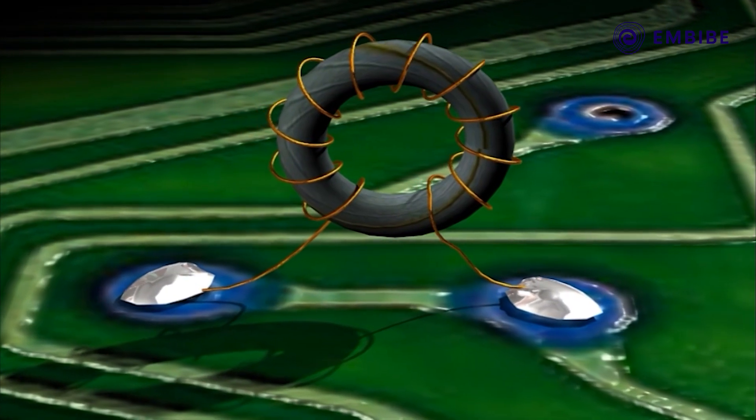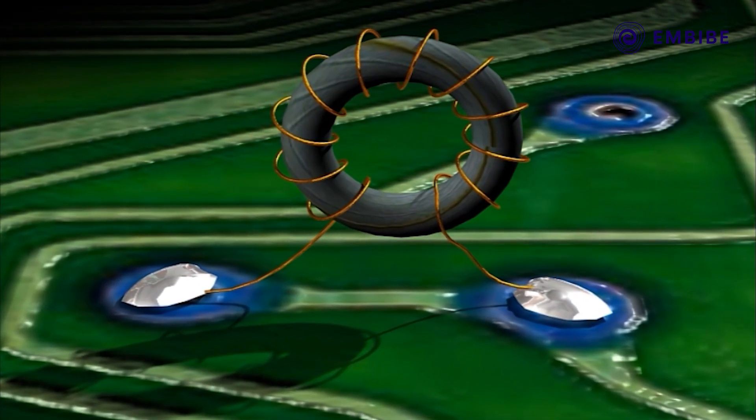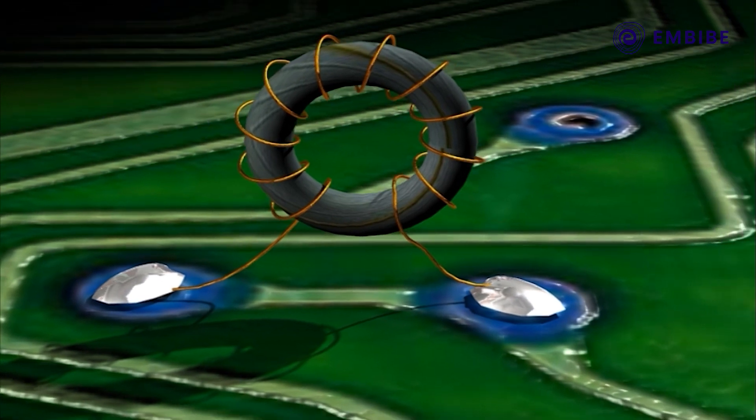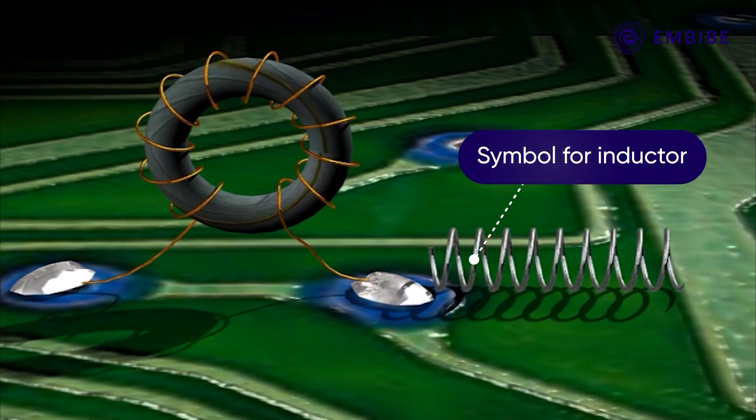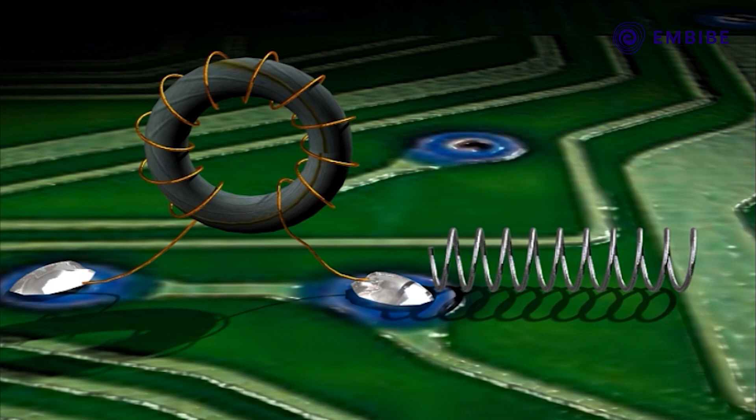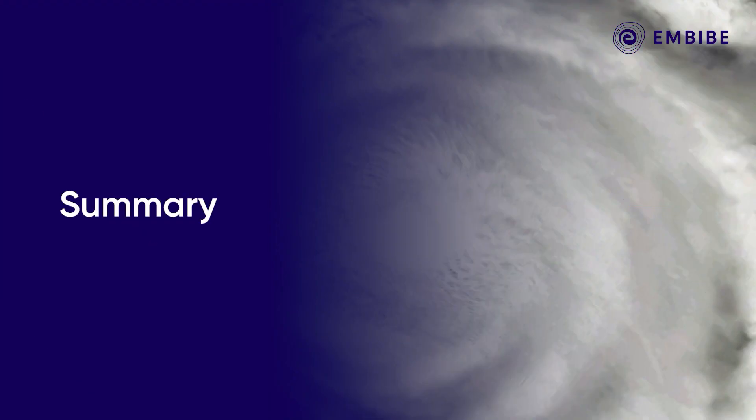In a circuit, a component which has self-inductance is called an inductor. The symbol for an inductor in a circuit is shown. Lenz's law also holds for self-inductance. Let us summarize what we have learnt.